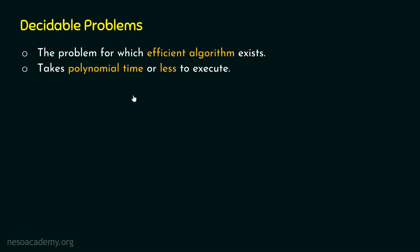So if an algorithm takes polynomial time or less, it is called an efficient algorithm, and the problem it solves is a decidable problem. Connecting this to the last lecture: the good algorithm took 70 nanoseconds and the bad algorithm took nearly 8 hours.